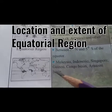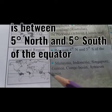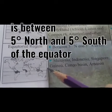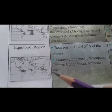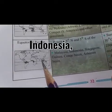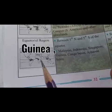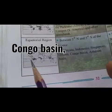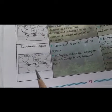The location and extent of the equatorial natural region is between 5 degrees north and 5 degrees south of the equator. Malaysia, Indonesia, Singapore, Guyana, Congo Basin, and Amazon Basin are examples of the equatorial region.